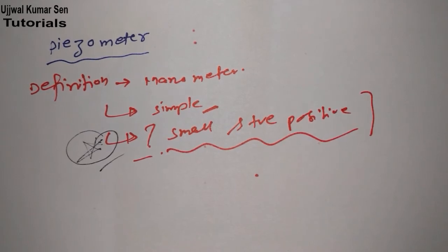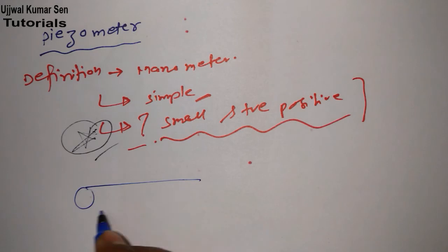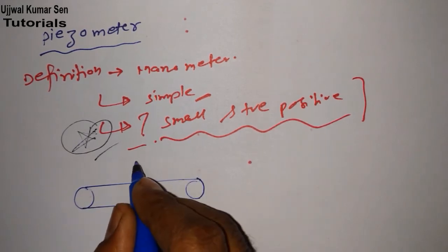Now let's go back to the diagram. By using the diagram we can easily figure out how we can find out the pressure by using this piezometer. Suppose that we are having a pipe, and here we are fitting one small pipe in this pipe.